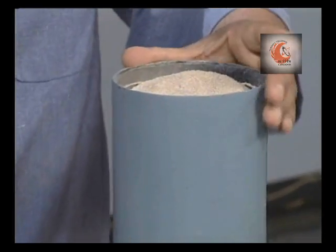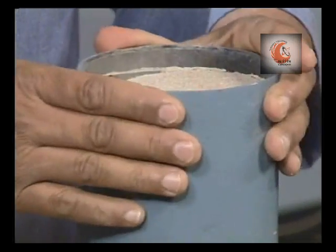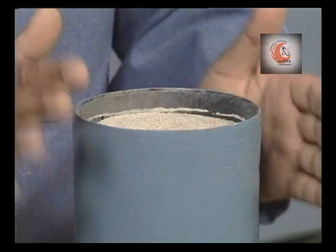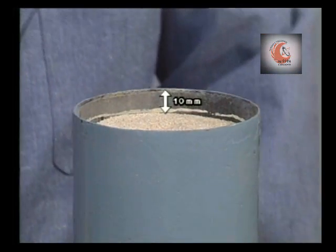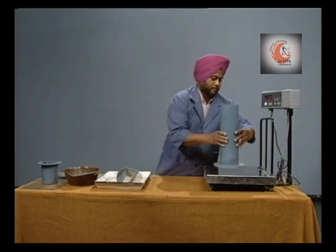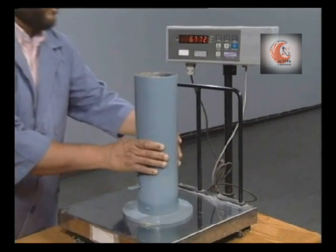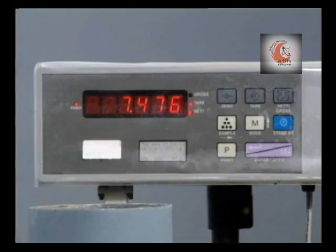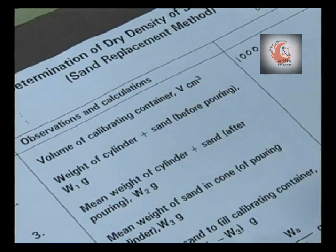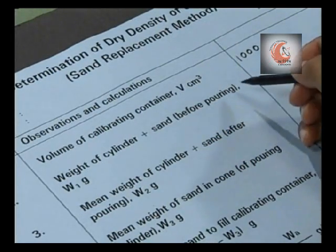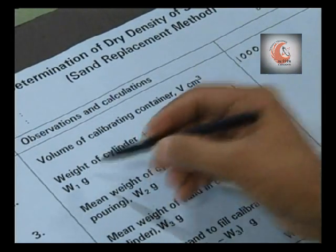Now fill the sand pouring cylinder with calibrating sand to within about 10 mm of its top. Weigh the sand pouring cylinder with sand and record the weight of the cylinder with sand before pouring, that is W1.